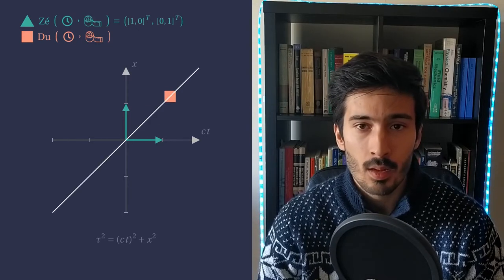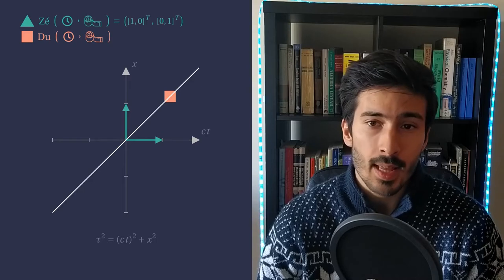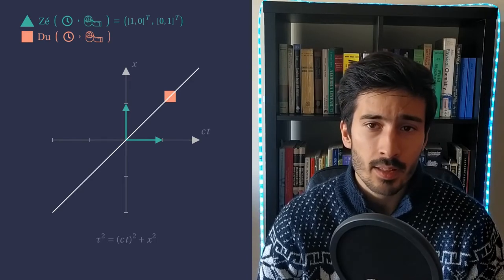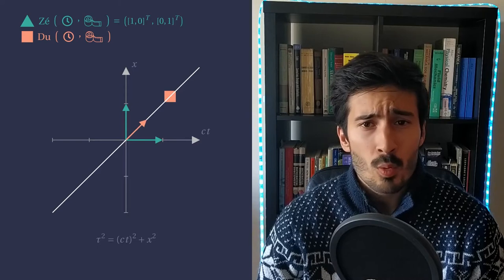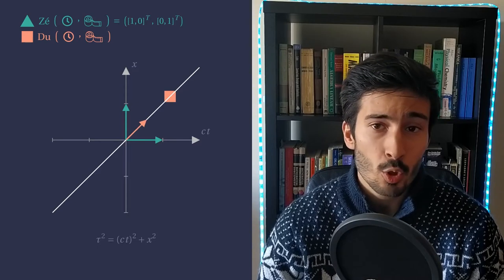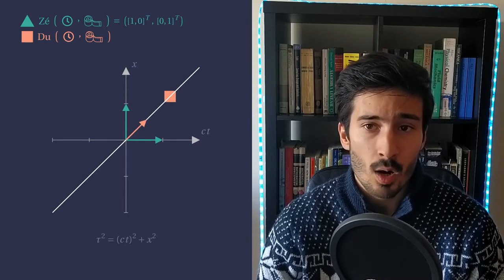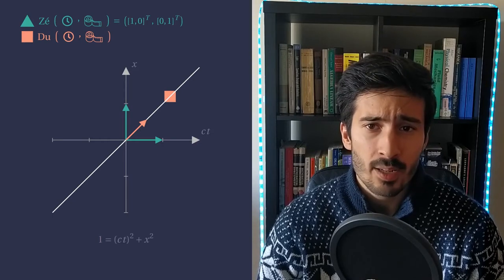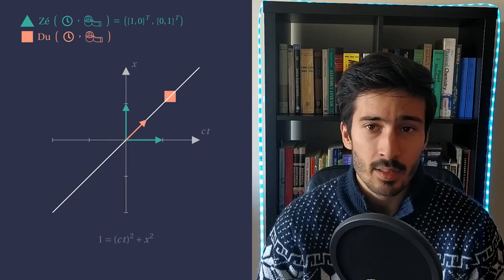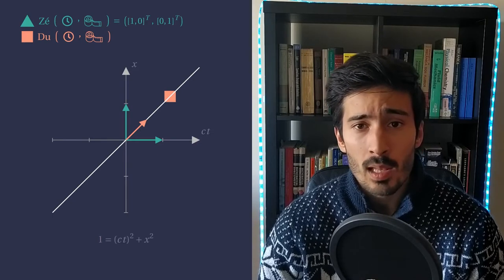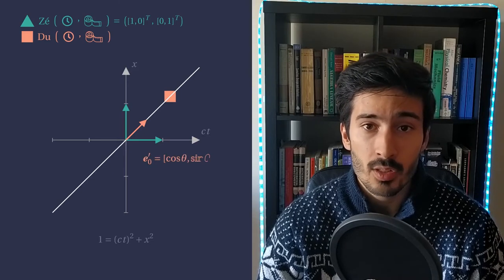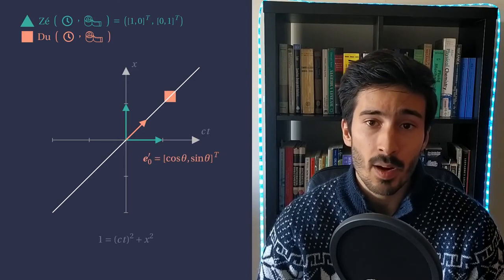From Du's perspective, he is standing still and only moving through time, so his clock is a vector along his world line. We also want his clock to measure unit amounts of time, so its norm must be unitary. Now, how can we make sure that whatever the speed this identity is respected? Well, we let the clock be expressed using the sine and the cosine functions, which automatically satisfy the equality.